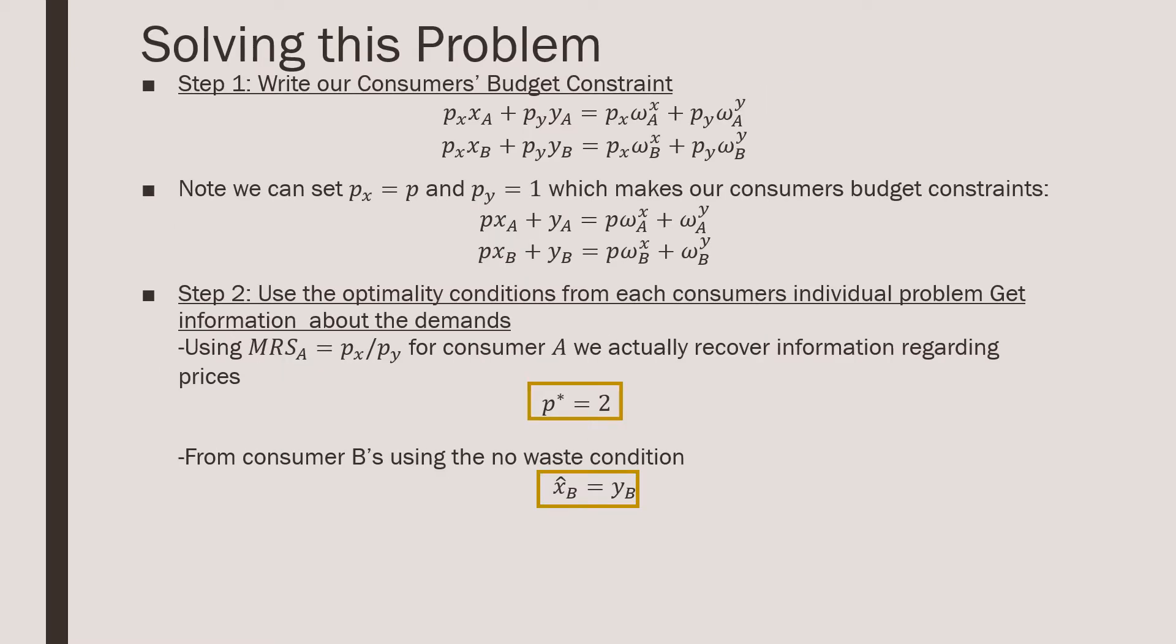So we're going to solve this problem step by step. Step number one is that we're going to write out our consumer's budget constraint, noting that we can normalize one of our prices. This time it's going to be the price of good Y being equal to one and price of good X, we're just going to keep there, we're just going to call it P. Step number two is that we're going to use the optimality conditions from each consumer, and I'm going to be careful with my language here not to solve for the intermediate demands, but we're going to use it to get information about the structure of our problem and our preferences here.